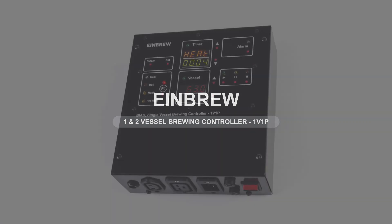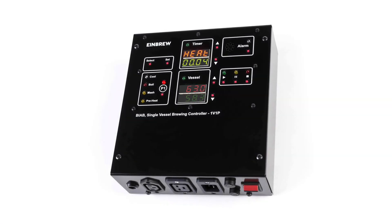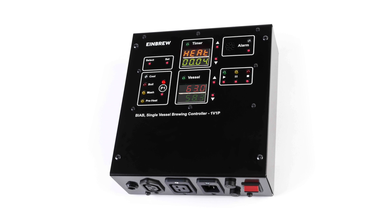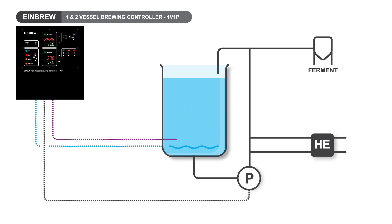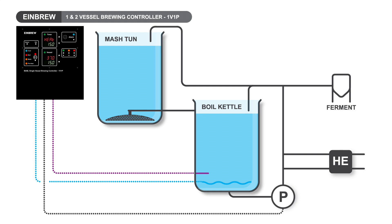The Einbrew 1v1P is a unique integrated heating and pump controller with integral timer which allows all-grain brewers to store a recipe and achieve precise and consistent control of their pumped or unpumped brew-in-a-bag system or their one or two vessel system.